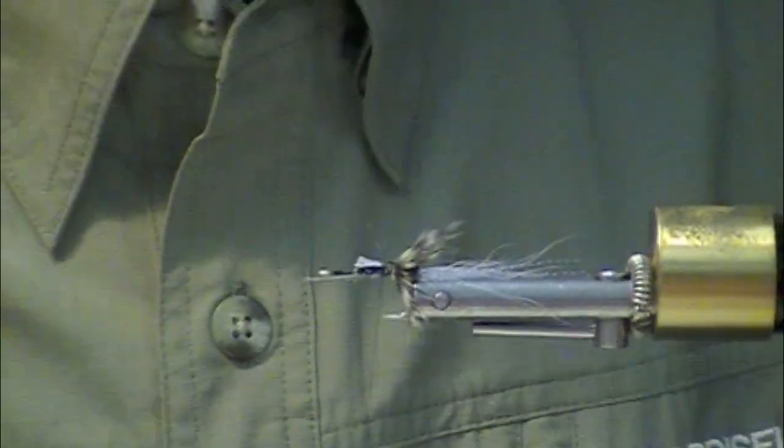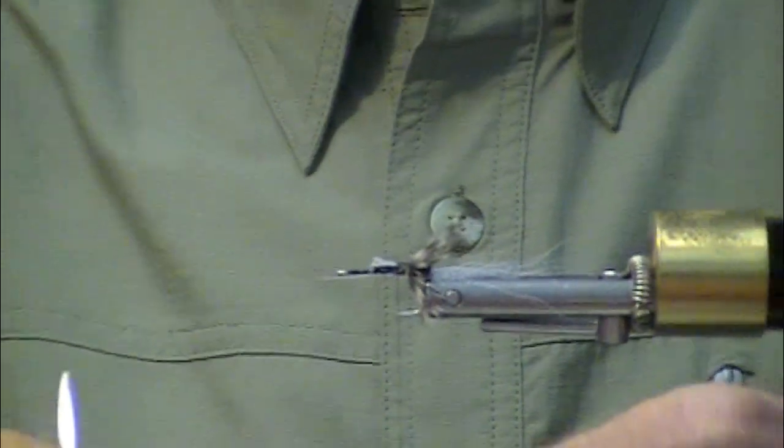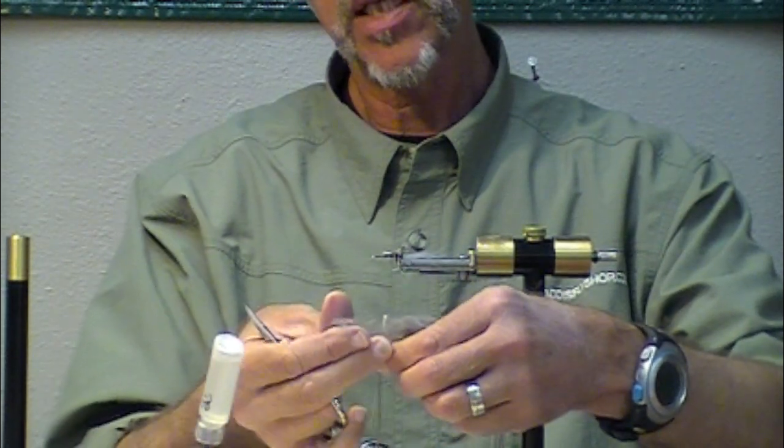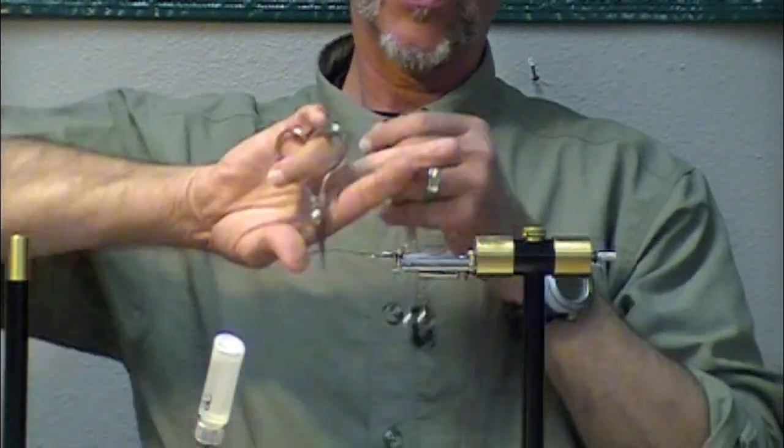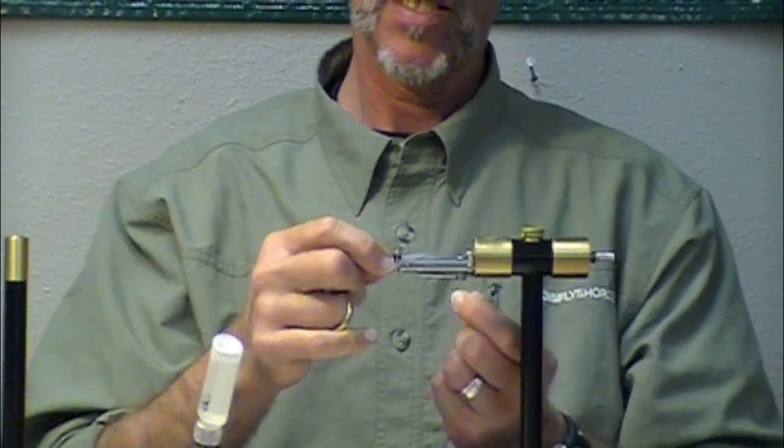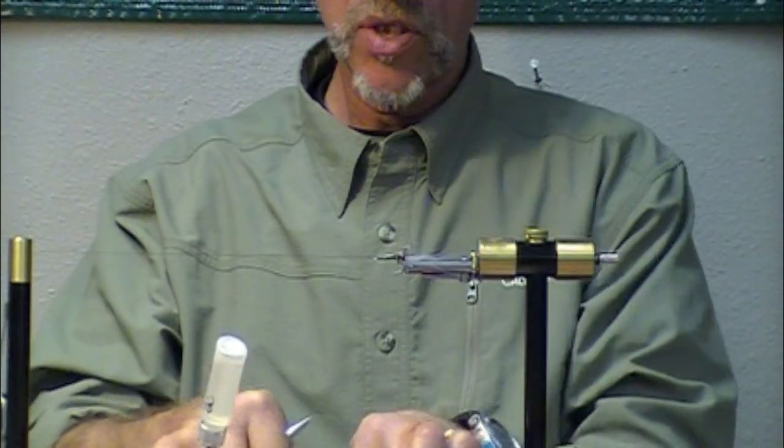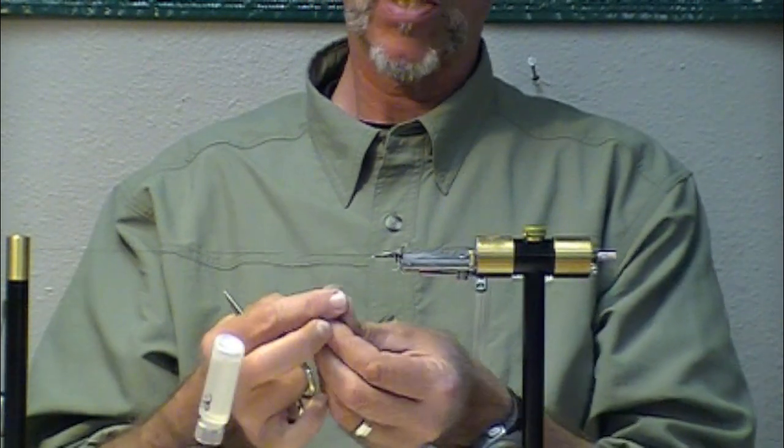Now my body material, I think it's called Hairline Plus. It's a rabbit dubbing. It's got some gray in it. I like to add little bits of ice dub and a little bit of sparkly stuff to it.